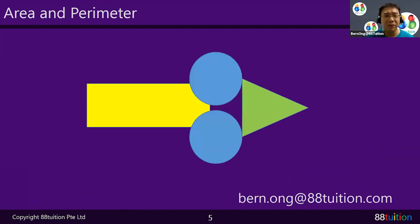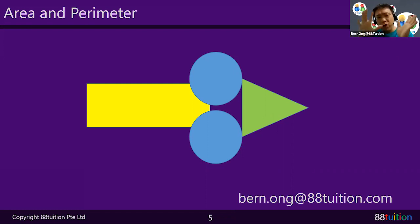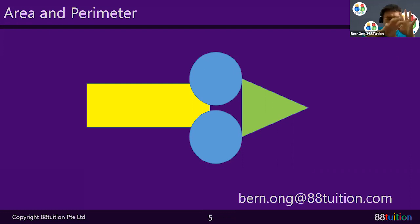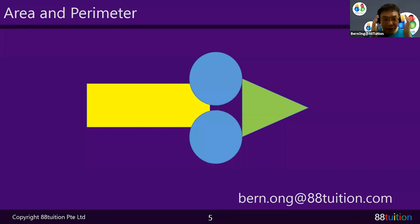Area and perimeter questions like this are very doable. Three key skills: number one, remember the formulas; number two, you may need to cut and paste to form another full shape; and number three, visualize — after removing a shape, what will happen? These three skills — formulas, cutting and pasting, and visualization — are what area and perimeter questions are all about. That's all for this question. This is Bernong from 88 Tuition signing off. See you soon, bye-bye!